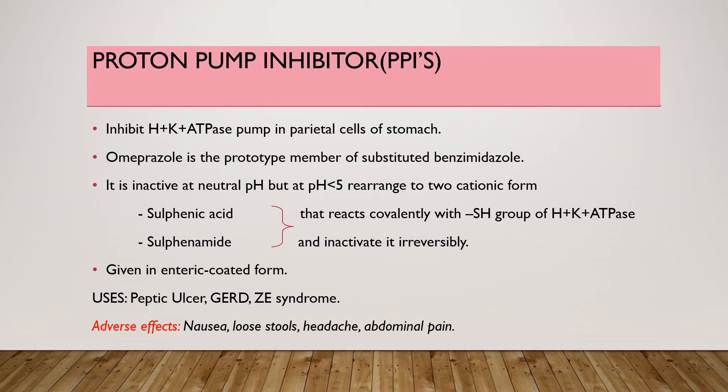Proton pump inhibitors are given orally, early morning, on an empty stomach. Uses include treatment of peptic ulcer, gastroesophageal reflux disease, and Zollinger-Ellison syndrome. Adverse effects are minimal, including nausea, loose stools, headache, and abdominal pain.